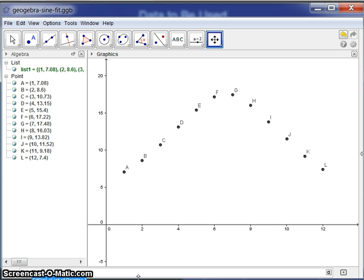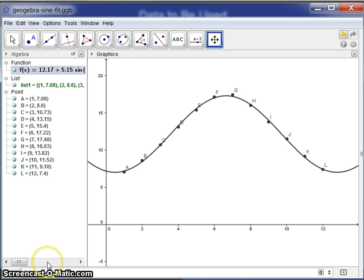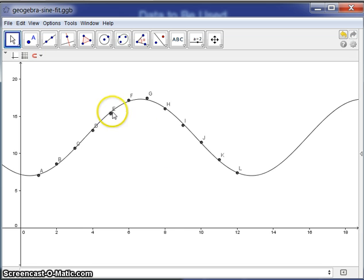And if you notice the pop-up here, it says what you need are brackets and a list of points. So we put in the brackets, and the list we're going to use is right up here in the algebra view, list 1. So I just type in list 1, hit enter, and there we have the sign fit. And again, we can even dispense with the algebra view if we want, and we get something like that.